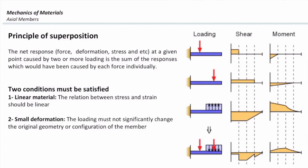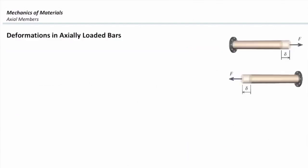Now let me introduce the deformation equation for the axially loaded element. An axially loaded element is subjected to axial force, like the one shown in this figure. To determine deformation, we combine known equations into one. Stress is F over A. Using Hooke's law, strain is stress over modulus of elasticity, so strain equals F over EA. Deformation is strain times length, giving delta = FL over EA. That is the one equation I want to introduce for axially loaded elements.